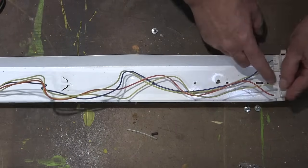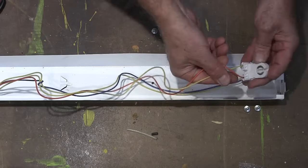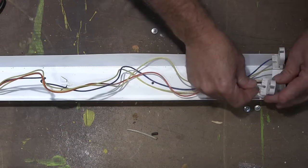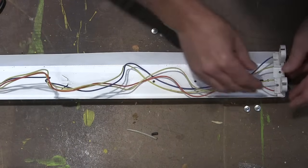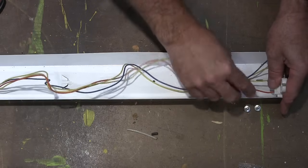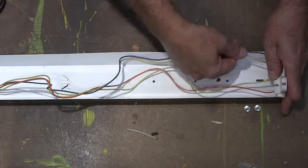There are different types. These are called tombstones because they kind of look like a tombstone. This is what the bulb locks into. You see these, they have two wires coming out. That's what you want to see.